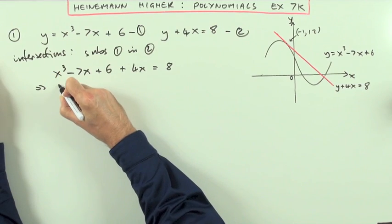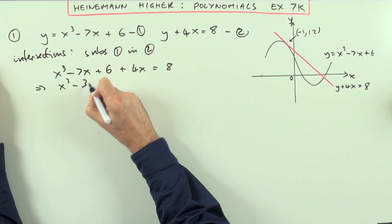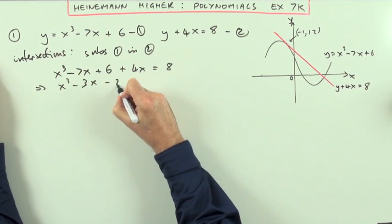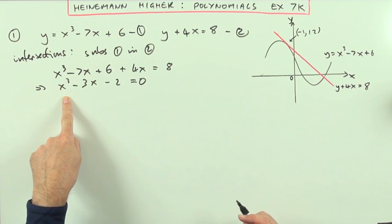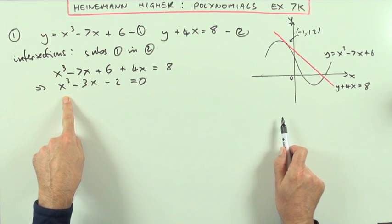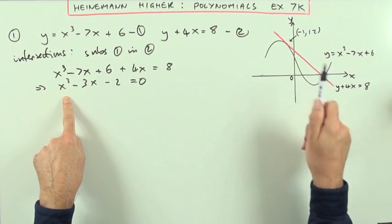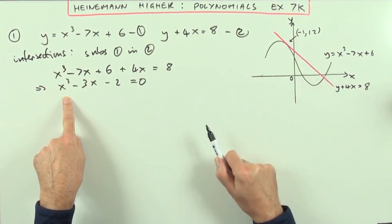Then gathering it all to one side, x³ - 3x - 2 = 0 for the equation to be solved. Now for this one I could go to synthetic division because I know one of the roots to this equation.